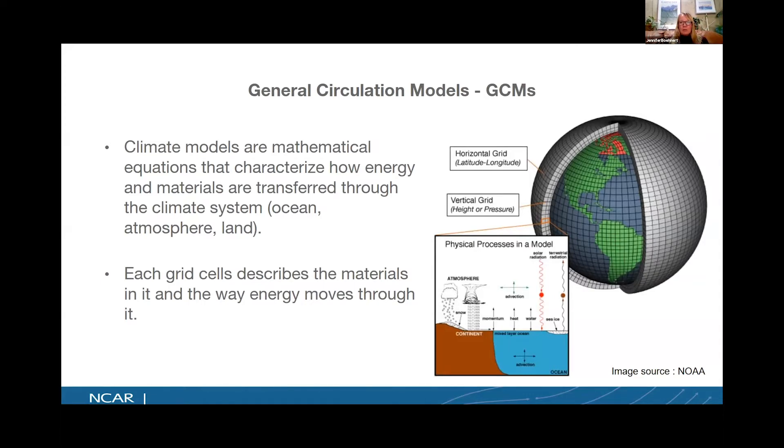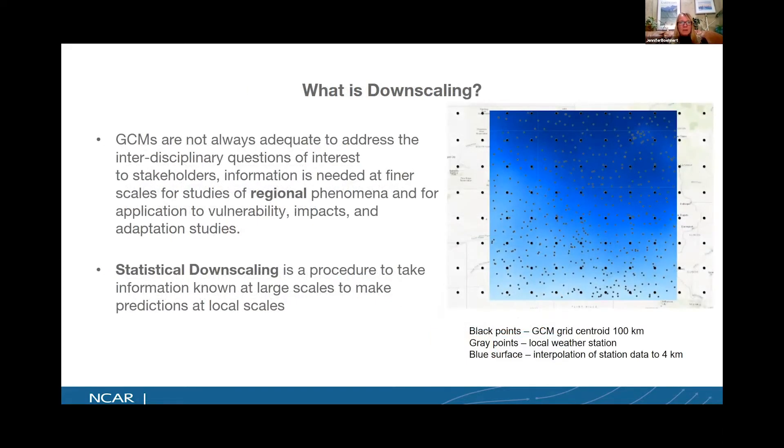GCM or global climate model resolution tends to be rather coarse. Right now we're talking about 100 kilometer resolution. Back 30 years ago when we were first running these models, we're talking about 500 kilometers. So we've come a long way. However, our 100 kilometer resolution is not really adequate for addressing interdisciplinary questions which are of interest to stakeholders. The information needs to be at a much finer resolution for doing local and regional scale analysis, taking a look at vulnerability, impacts, and adaptation. One way that we can go from this large scale resolution to a finer resolution is through a technique called statistical downscaling.